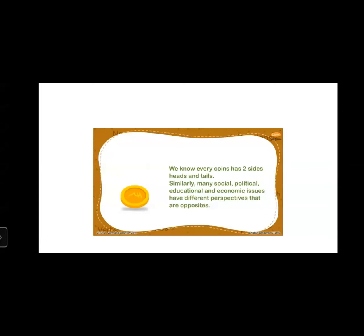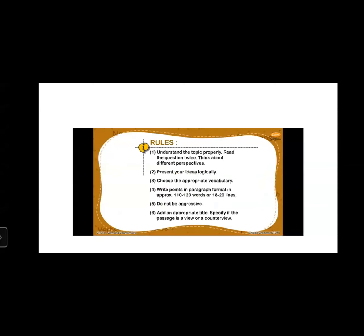Rules for writing view or counter view: understand the topic properly — read the question twice and think about different perspectives. Present your ideas logically, maintaining a proper flow. Choose appropriate vocabulary. Write points in paragraph format in approximately 110 to 120 words or 18 to 20 lines. Do not be aggressive in your writing, whether writing in favor or against.